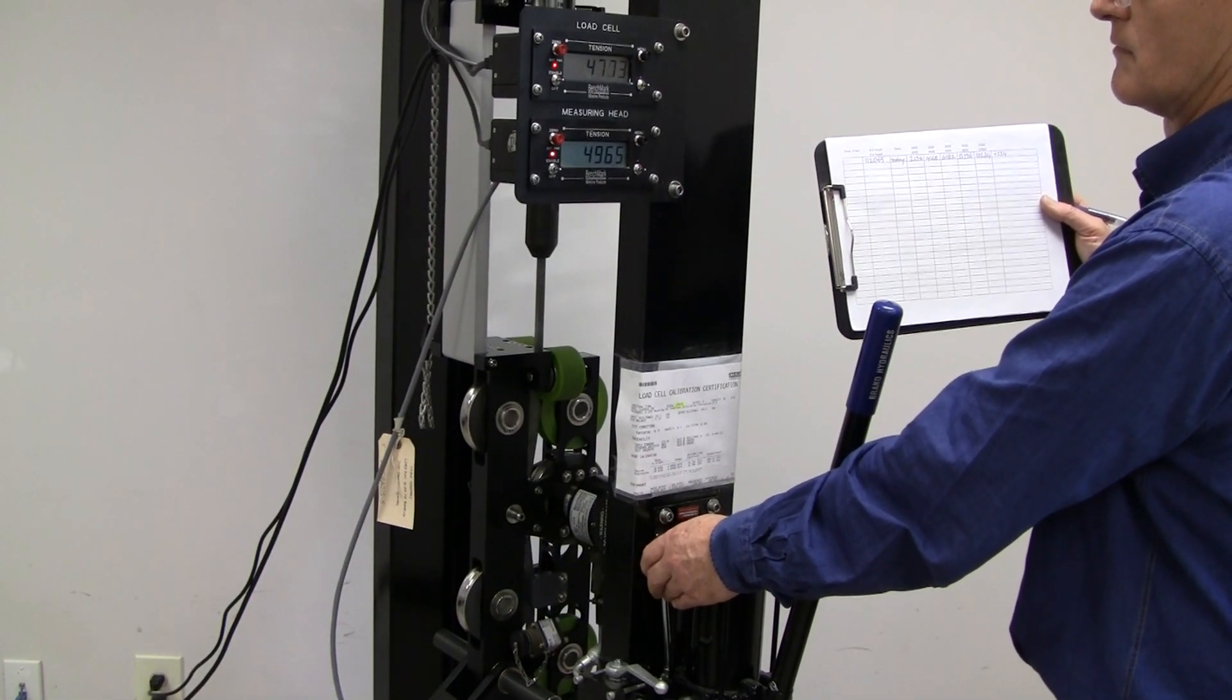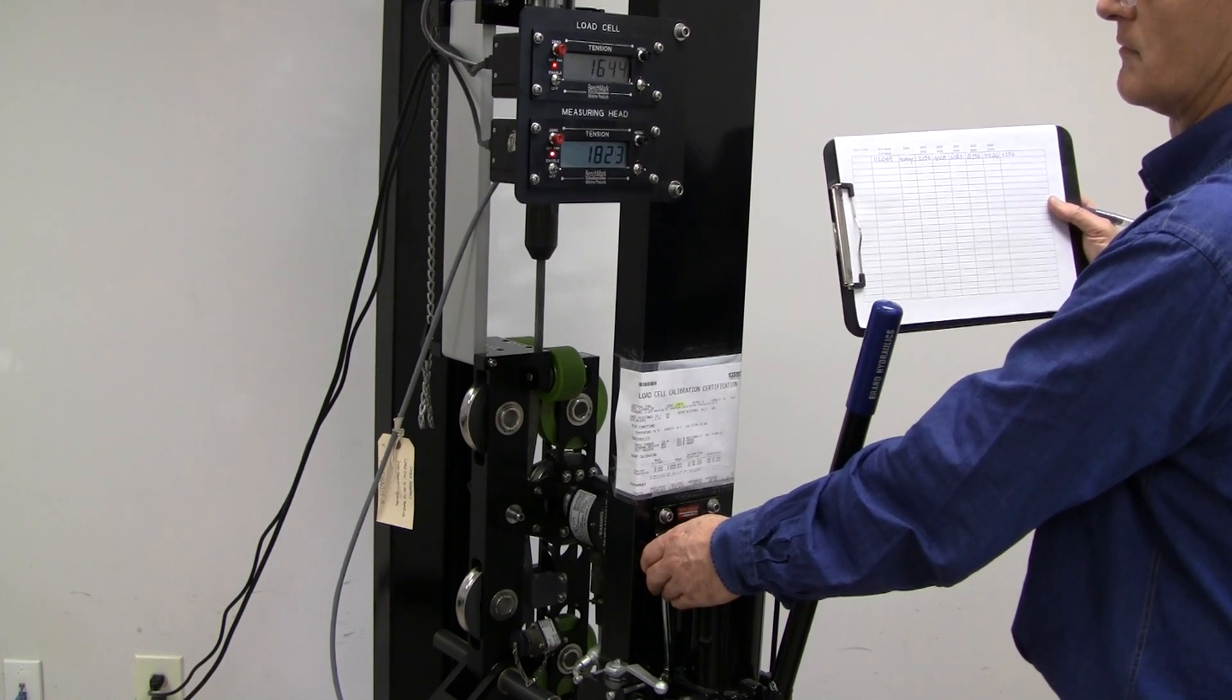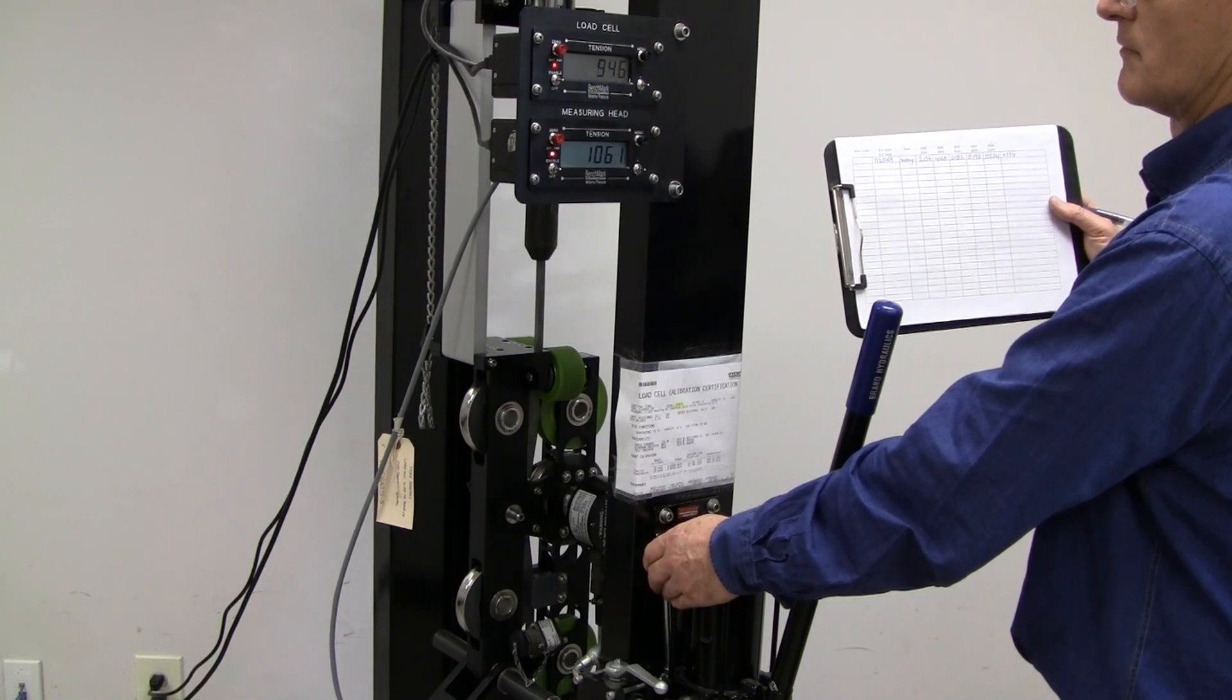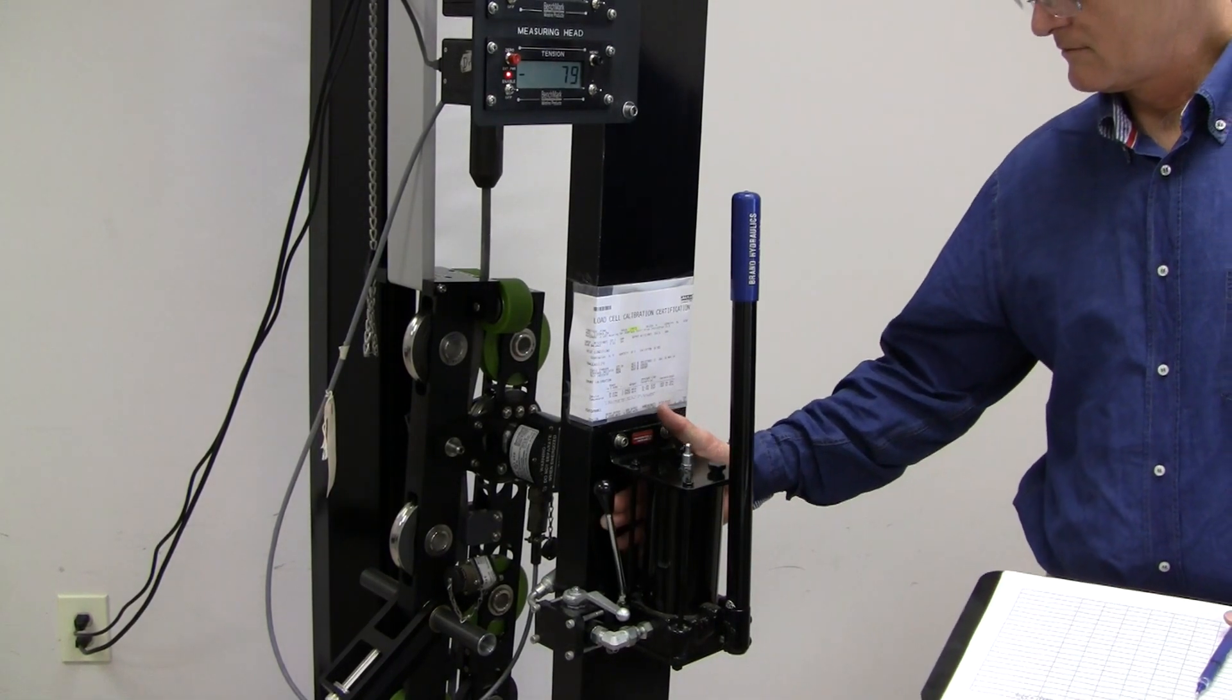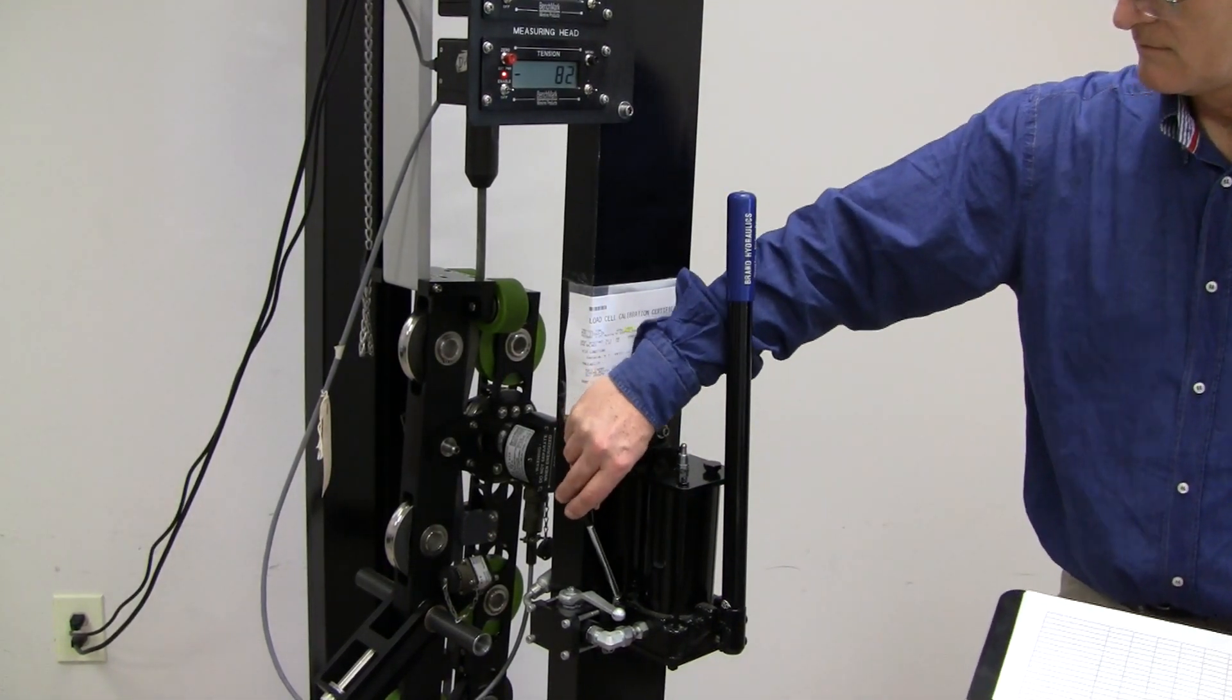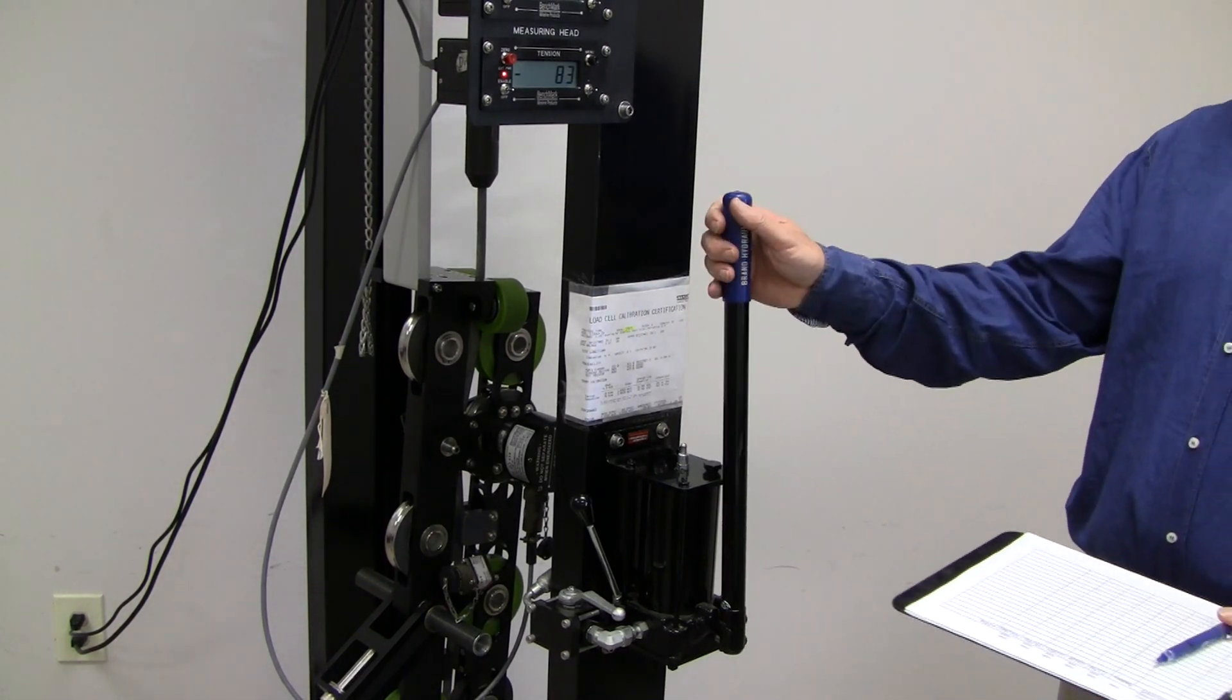Use the pressure release handle on the hydraulic system and allow the pressure to return to zero. Now reposition the pressure release handle and verify that the cable is slack.